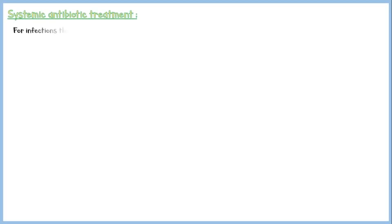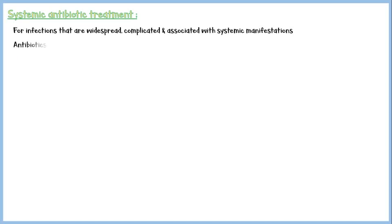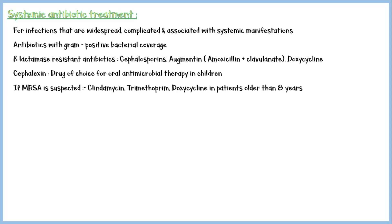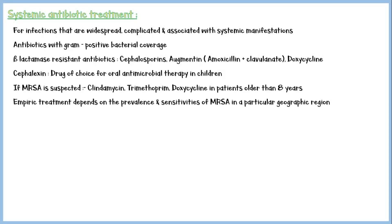Systemic antibiotic treatment is recommended for infections that are widespread, complicated, and associated with systemic manifestations. Antibiotics used should have gram-positive bacterial coverage. Beta-lactamase-resistant antibiotics such as cephalosporins, augmentin, and doxycycline are used if methicillin-susceptible Staphylococcus aureus is suspected. Cephalexin appears to be the drug of choice in children. If MRSA is suspected, alternatives include clindamycin, trimethoprim, and doxycycline for patients older than 8 years. Empiric treatment depends on the prevalence and sensitivities of MRSA in the geographic region. Erythromycin and clindamycin are used as alternatives in patients with penicillin hypersensitivity.